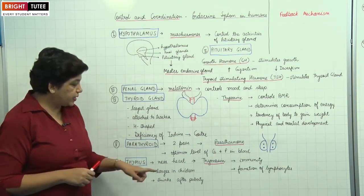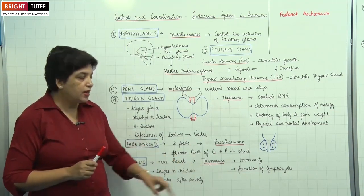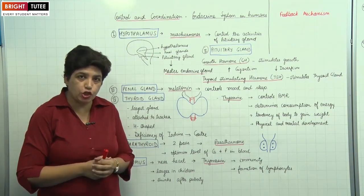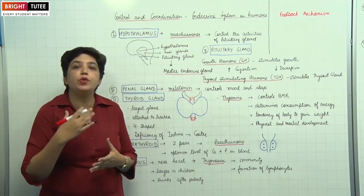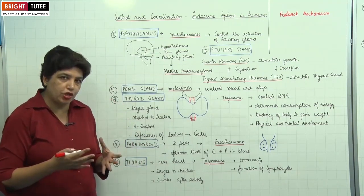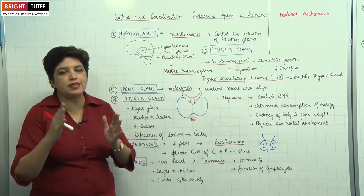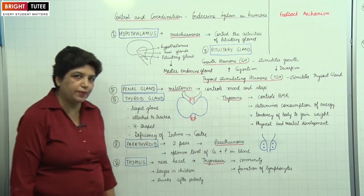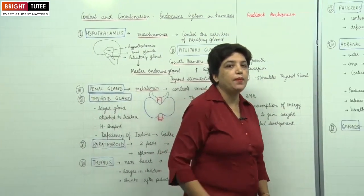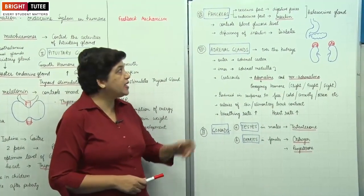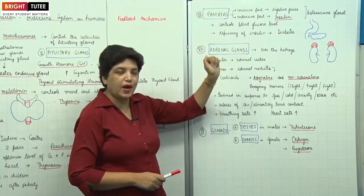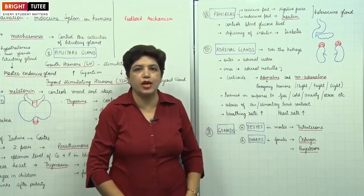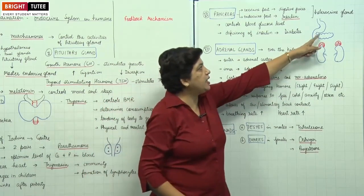The next gland is the thymus, present near the heart. The hormone released is thymosin, which plays an important role in immunity and in the production of lymphocytes, protecting against allergies and infections. It is especially important in growing children when immunity is building up — it is larger in children, reaches maximum size at puberty, then starts shrinking, and is microscopic in old age. The next gland is the pancreas, present near the stomach. It has both an exocrine part and an endocrine part, which is why pancreas is called a heterocrine gland.